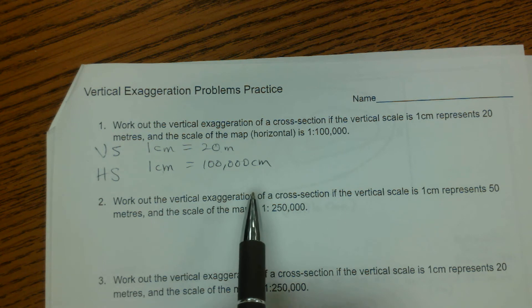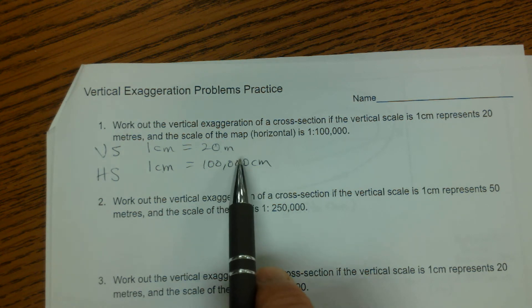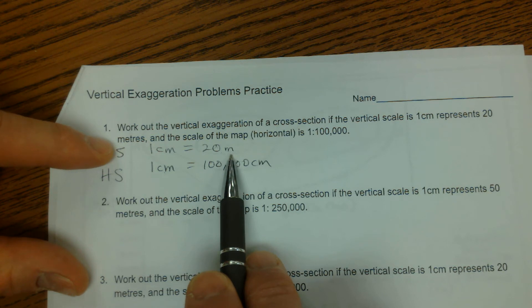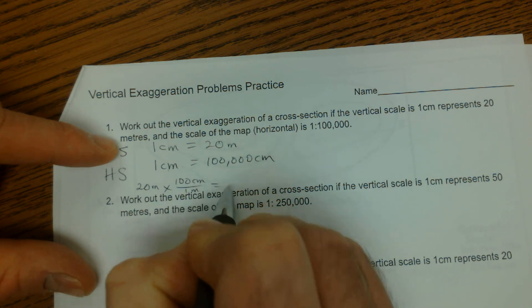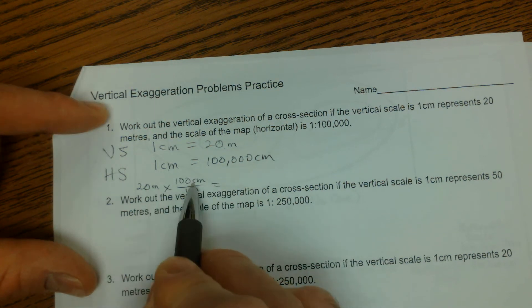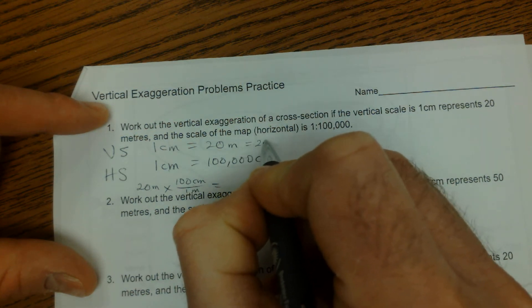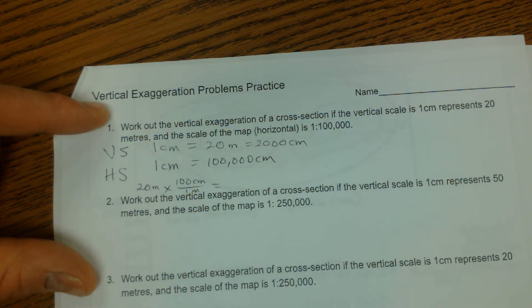And I think it's pretty easy to go from meters to centimeters. Now I know that there are 100 centimeters in a meter, so 20 meters times 100 centimeters for every 1 meter. Well, 20 times 100, that's 2,000 centimeters.